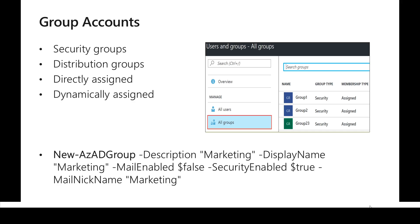There are two types of groups available with Azure Active Directory: security groups and distribution groups. Distribution groups are mainly targeted for email group access — there is an email distribution list, and sending to it means all users receive that email. Security groups are mainly targeted towards managing access to certain services, and by default everything works on security group permissions.